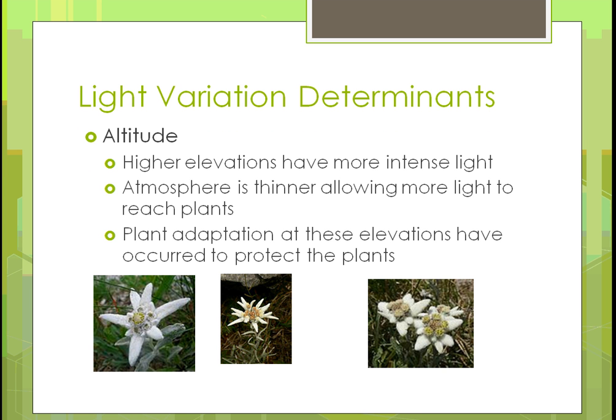At higher elevations, light is more intense because the atmosphere is thinner, allowing more light to reach through. For example, a plant growing in Colorado in the mountains will grow differently than in other parts of the U.S. because the thinner atmosphere lets sunlight penetrate faster. You can see differences in plant fullness based on elevation.